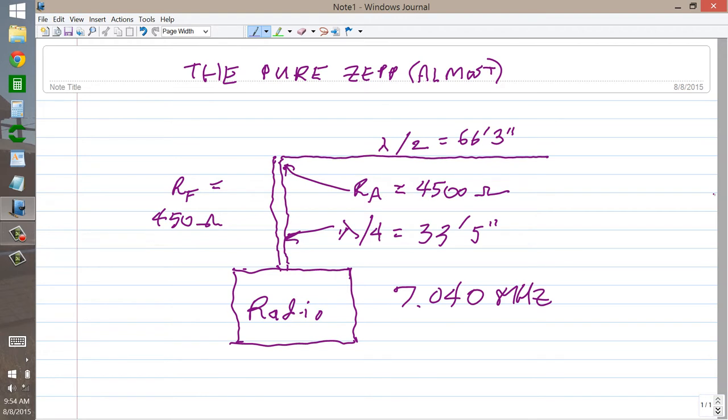But those numbers would have to be tweaked by experimentation and, of course, we may not get the 4500 ohms here. R sub F is the resistance or characteristic impedance, Z sub 0, of the feed line, which is 450 ohms. This is ladder line, 450 ohm ladder line, very low loss.